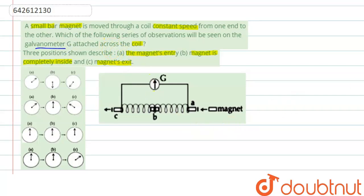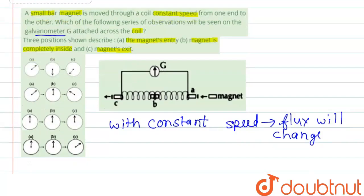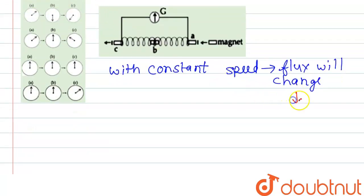So here we see that when the magnet will enter in the coil with constant speed, the flux will change. The flux will change and due to this the EMF will be induced.